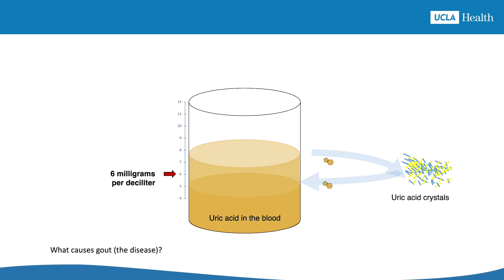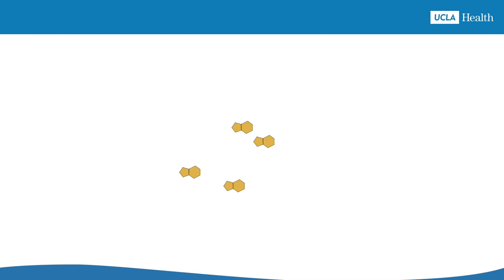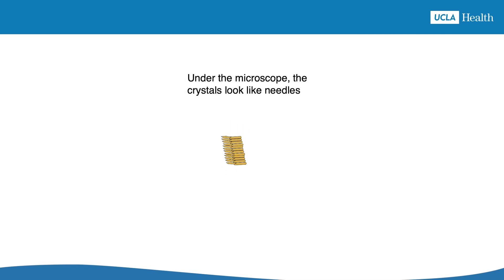On the other hand, if you can lower the uric acid level and keep it below 6 mg/dL, the crystals will start to dissolve — and with no crystals, there are no gout attacks. Let's talk about how uric acid dissolved in the blood becomes crystals. Uric acid crystals start with individual molecules flipped on their sides and stacked up, kind of like a roll of coins. They can keep stacking, resulting in a long, needle-shaped crystal that is visible under a microscope.